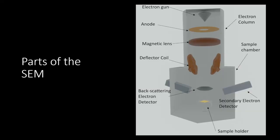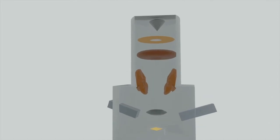The SCM has many working parts such as the electron gun, the electron column, the anode, magnetic lenses, deflector coils, a sample chamber, backscattering electron detector, a sample holder, and a secondary electron detector.